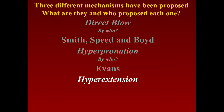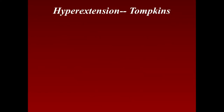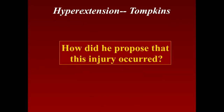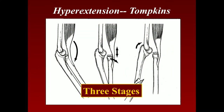But that was a static test and didn't take into consideration the muscles. The person who took muscles into consideration was Tompkins — just a general orthopedic practitioner in Michigan. He came up with this idea, and I think in my opinion his is the most plausible, because it also tells you what happens.